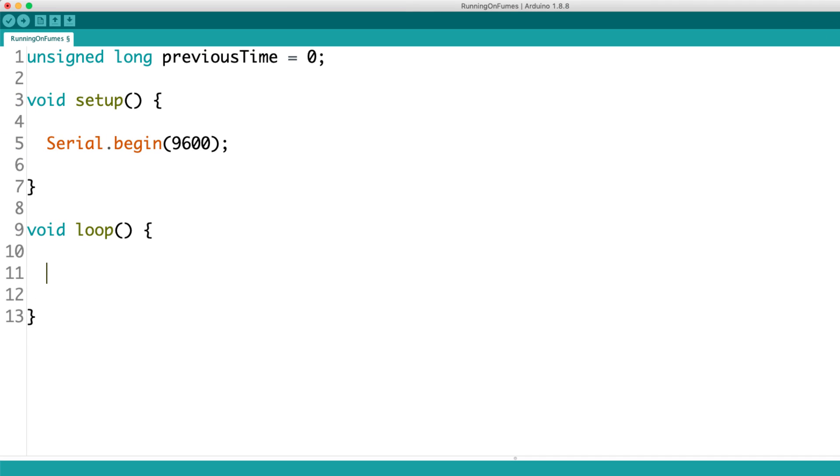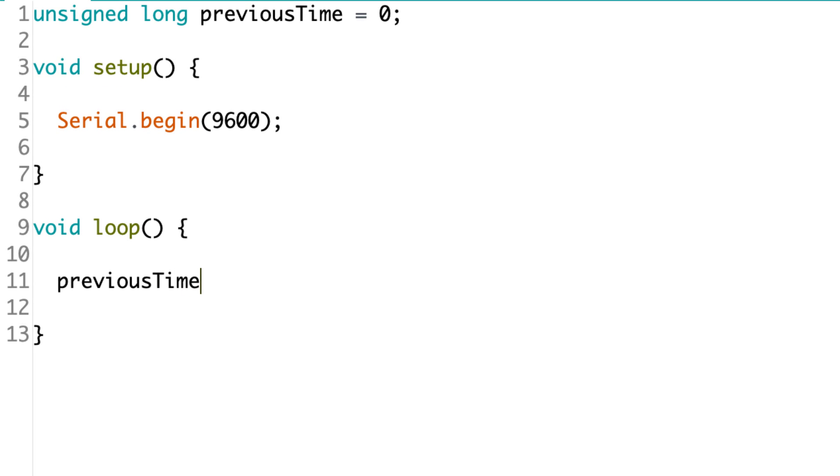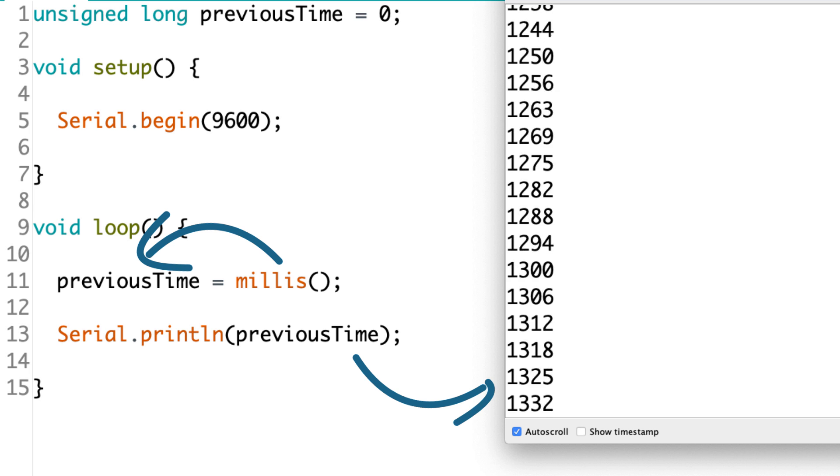So how do you actually get that value? Well to get the value, you can call the millis function and then set the returned value equal to a variable. So here I've got a variable named previous time and I set it equal to the output of the millis function. So every time the Arduino goes through the loop, this variable is going to be updated with the most recent count of time in milliseconds.